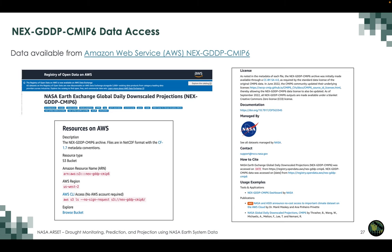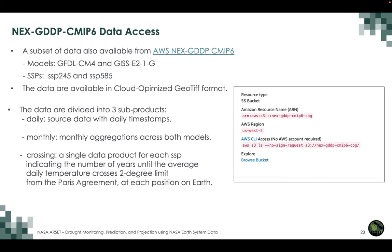There is a subset of data available from AWS with two models — GFDL (a NOAA global climate model) and GISS (a NASA global climate model) — and two scenarios: SSP2-4.5 and SSP5-8.5. The data are available in cloud-optimized GeoTIFF formats and divided into three sub-products: daily (source data with daily timestamps), monthly (monthly aggregation across both models), and crossing (a single data product indicating the number of years until average daily temperature crosses the 2-degree limit from the Paris Agreement at each location).